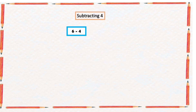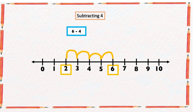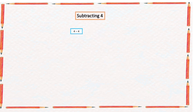Another example says six minus four. In the number line we're going to start from number six and count four numbers backward: one, two, three, four. The arrow ended at two, so six minus four is two.